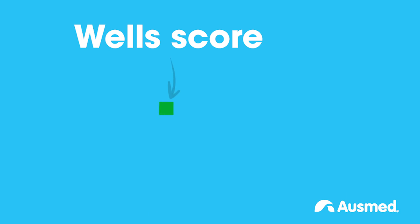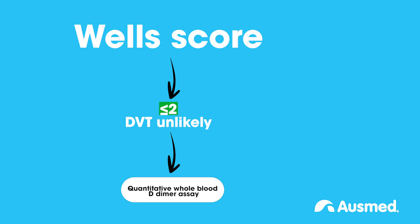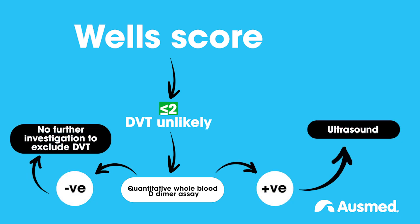In patients with a Wells Score of less than 2, a whole blood D-dimer assay should be performed to exclude a DVT safely. If the D-dimer assay is positive, they will require a compression ultrasound. A score above 2 on the Wells Score criteria also means that the patient requires a compression ultrasound, and if positive, treatment for DVT should be initiated.